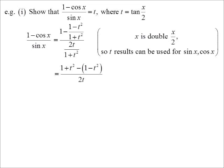So the one becomes one plus T squared. Tidying that up, I now have two T squared on two T, which is T, which is what we wanted to prove there.